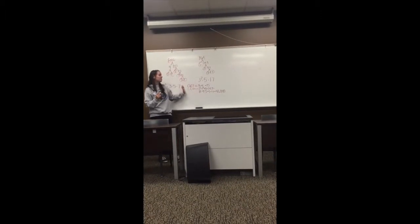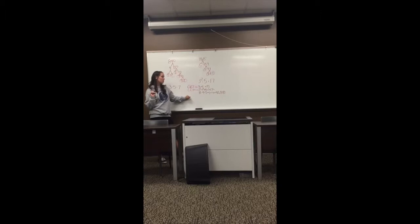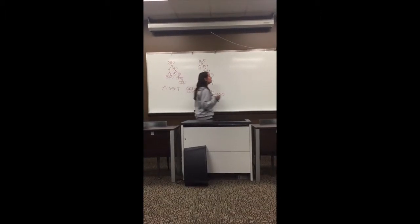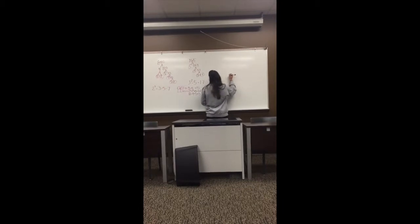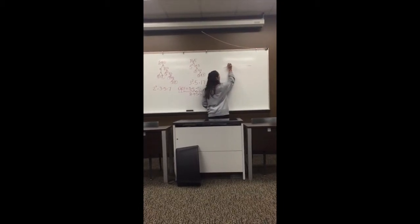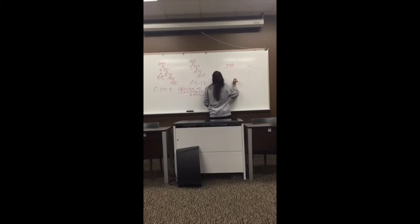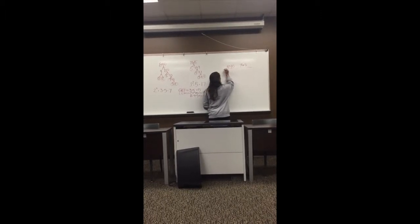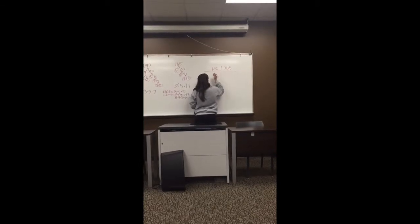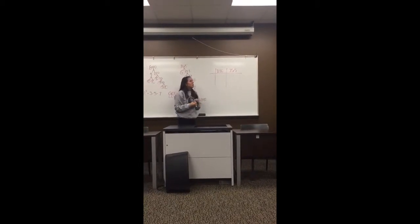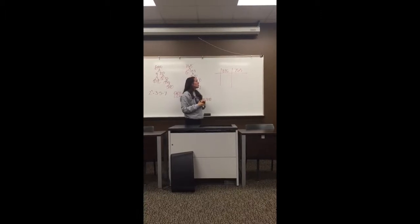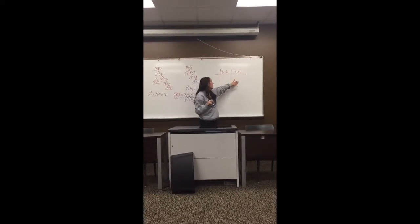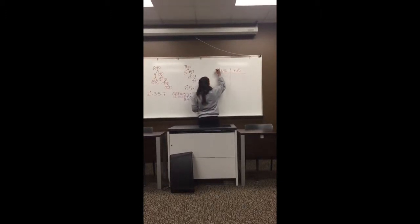So our greatest common factor is 15 and our least common multiple is 42,840. Now we're going to use a method called the slide method, and first you'll set it up by writing 840 and 765 beside each other. We're going to find what factor can go into both 840 and 765, and we can see that 5 can go into both of these.